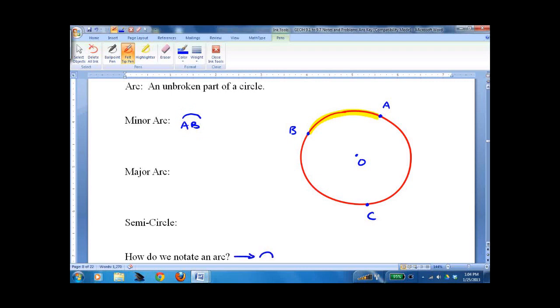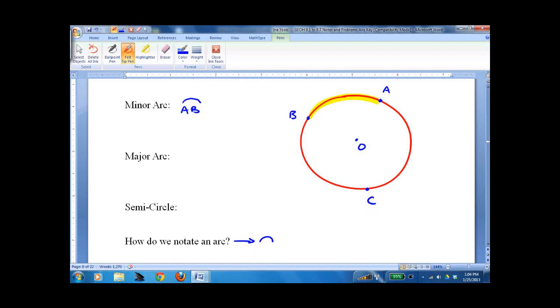We put a little wig on it, I suppose, is the best way to put it. And it's minor because it's less than 180 degrees, two letters.